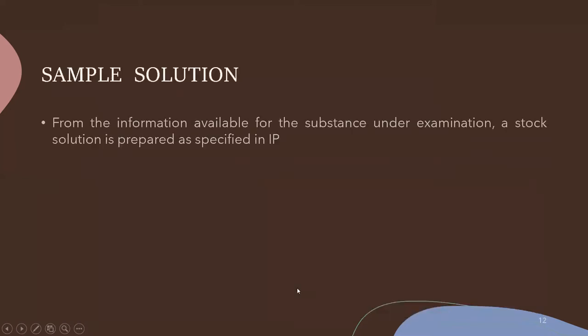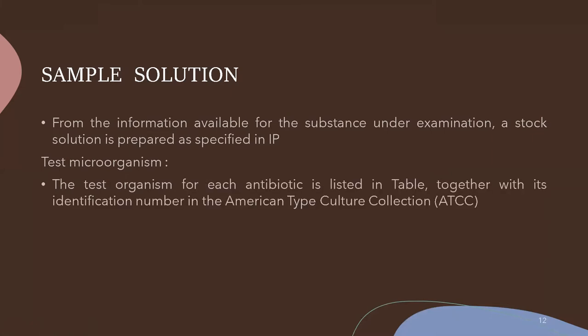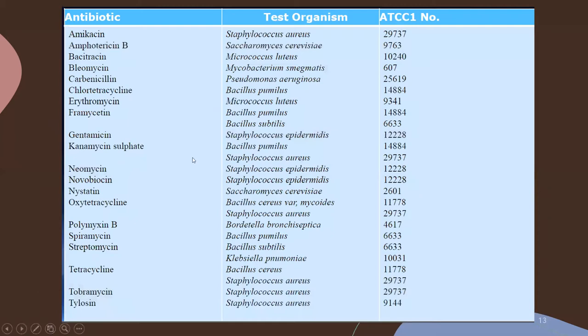The sample solution is prepared using the information available in the IP. The test microorganism for each antibiotic is specified in the pharmacopoeia. For streptomycin we require Bacillus subtilis, and therefore Bacillus subtilis is used as the test microorganism for this microbiological assay.